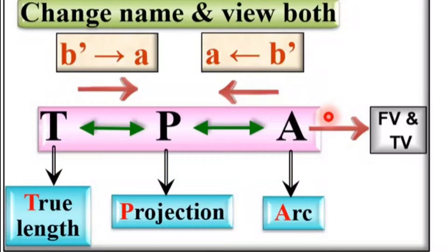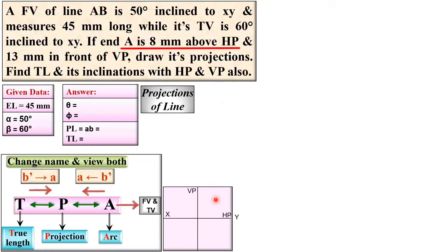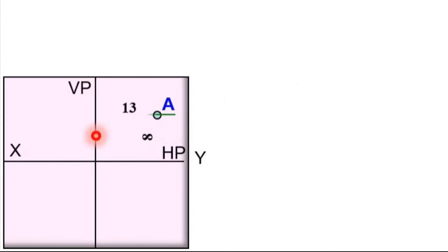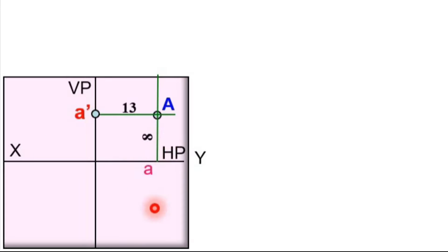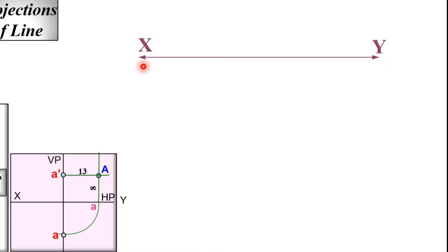This is the theme based on which we are going to solve the problem. First, complete the projection of point A. This is the reference line HP and VP — you can call it XY. A is 8 mm above HP and 13 mm in front of VP, meaning it is in the first quadrant. The front view is projected onto the vertical plane at 8 mm, and the top view is projected onto the horizontal plane. Since the horizontal plane is always rotated 90 degrees clockwise, point A moves to its final position. This is now the projection of point A.